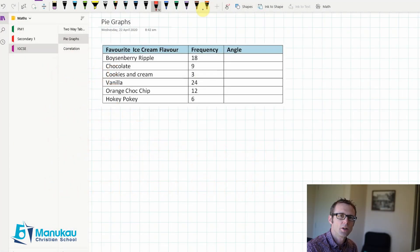Welcome IGCSE students. Today we're going to discuss pie graphs and scatter graphs, and learn how to do those. So the first thing we'll look at is pie graphs, and I've got an example here.